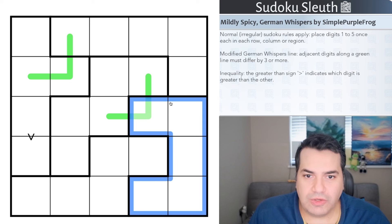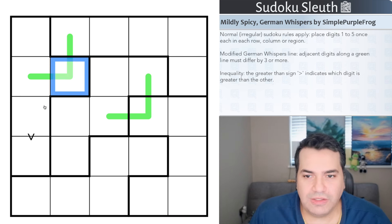Obviously the region outlines are defined by these thicker black lines. Then we have a modified German whispers line. I mean, it's going to have to be modified because if it has to be oscillating between one-two-three-four and six-seven-eight-nine, it's really going to struggle to find anything from six-seven-eight-nine in here.